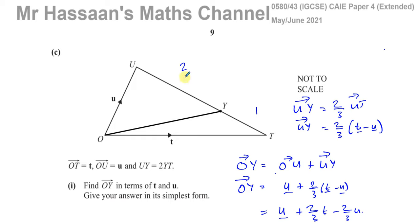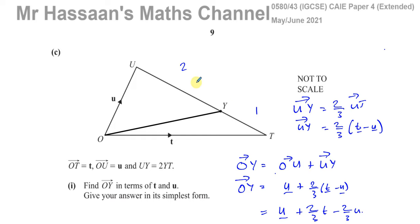That concludes question 4, parts B and C of the May-June 2021 Cambridge Paper 4 Variant 3 exam. Other questions from this paper are in the playlist shown here, and other IGCSE vector questions can be found in the vectors playlist. You can subscribe by clicking the link, and in the description there's an index for IGCSE and A-level questions by topic and paper. Thank you for watching and see you soon.